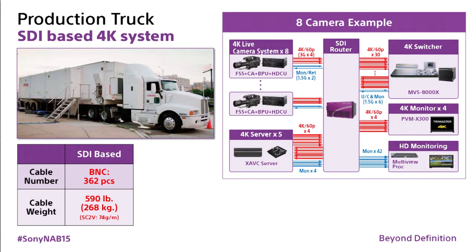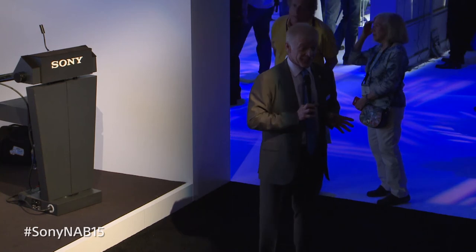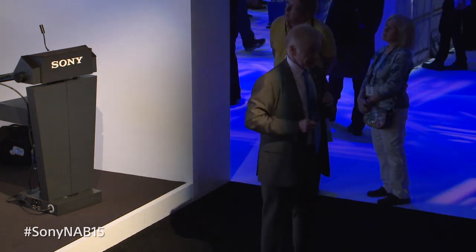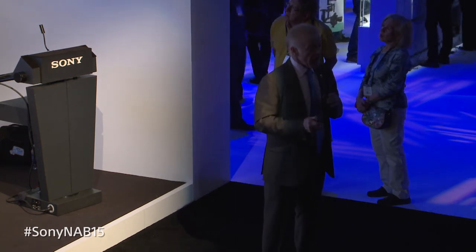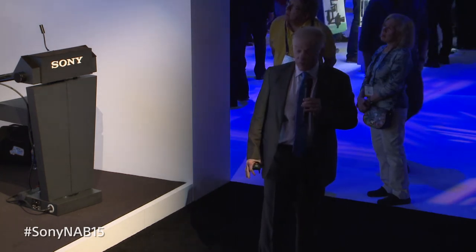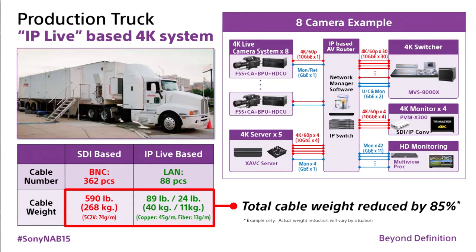We built a truck two years ago for the Confederation Cup and the World Cup. That truck had eight 4K cameras and 362 BNC cables inside — a lot of weight. If we were to replace this with IP, we would see an 85% reduction in wiring and weight in the truck. That is why we need to move to IP infrastructure.